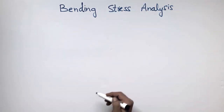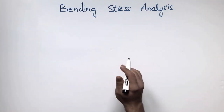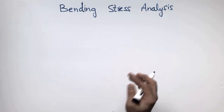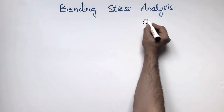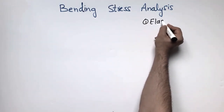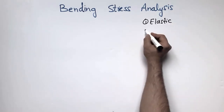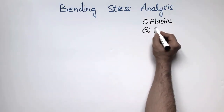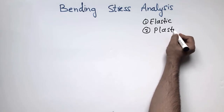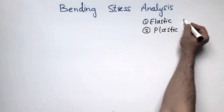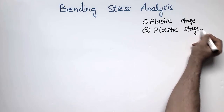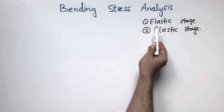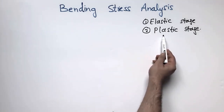It should be kept in mind that there are two types of stages in bending stresses. One is called the stresses in the elastic stage, and the second one is called the stresses in the plastic stage. I will explain the elastic stage first and then later on I will explain the plastic stage.